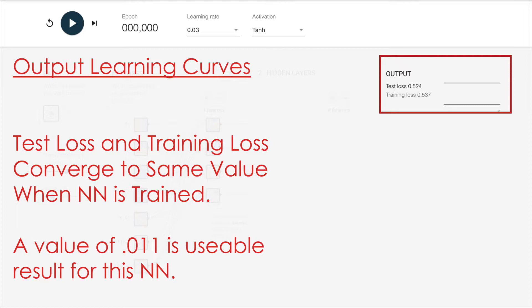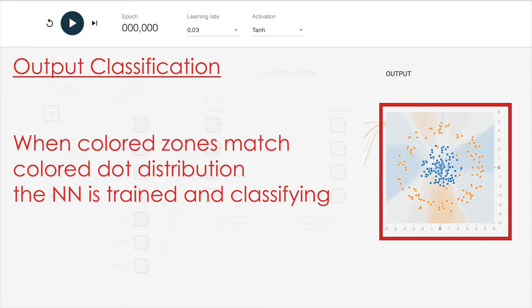We'll see these jump around. When we get down to about on the order of one percent variation or so, the neural net becomes usable for pattern recognition. But if it's higher than that, we might see it as being unreliable. Output classification is done when the colored zones match colored dot distribution, that the neural net is trained and classifying. So this is easier seen than explained, so we'll see how this works in a moment.